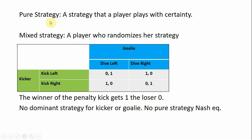Let's define pure strategy: a strategy that a player plays with certainty. A mixed strategy is one where a player randomizes her strategy, sometimes playing one strategy, sometimes another. So in this payoff matrix that describes penalty kicks in soccer,